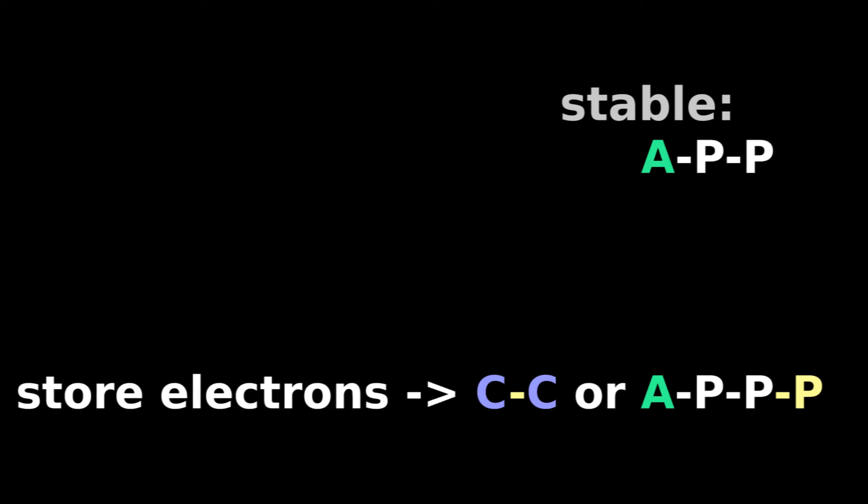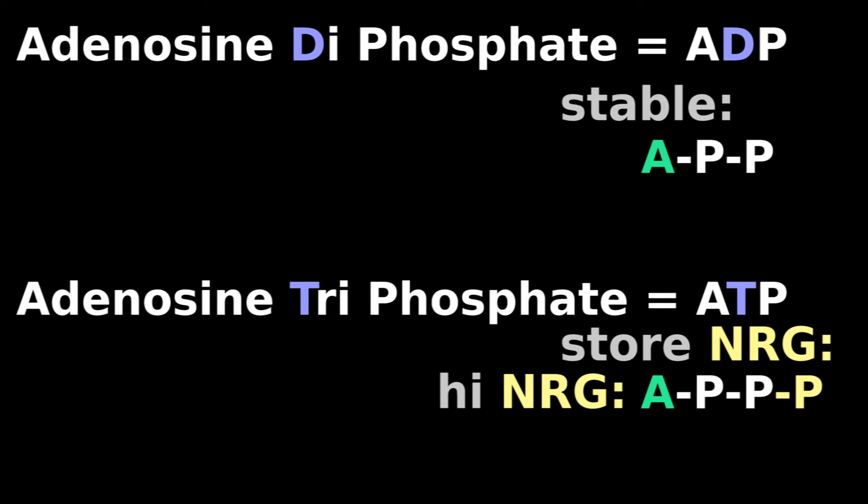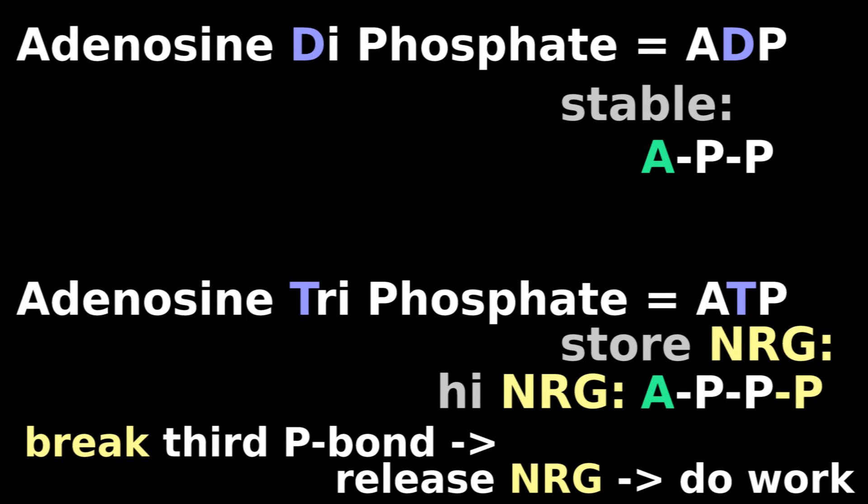Adenosine is stable with two phosphates. You can store energy by adding a third phosphate. This is a high-energy bond that is always ready to break, releasing stored energy to move proteins.